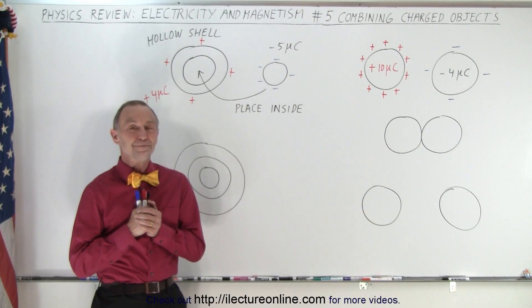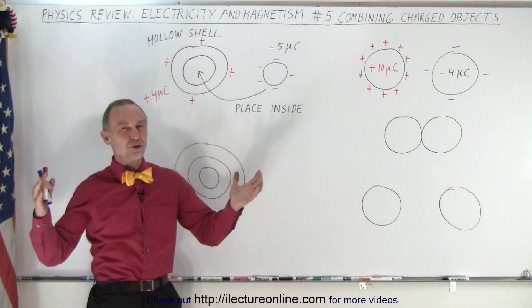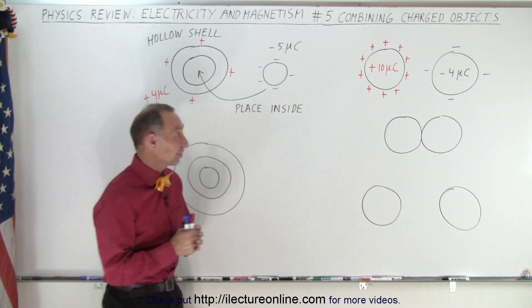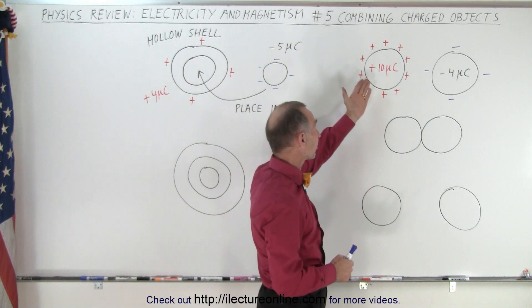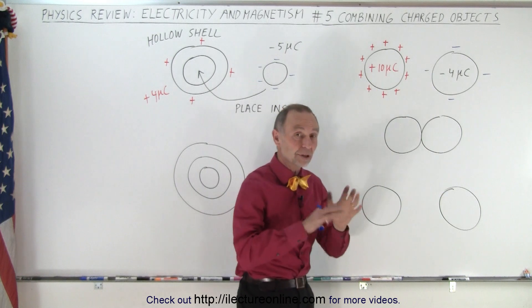Welcome to ElectronLine. So what happens when you combine charged objects? Like, for example, here we have a conductor that has an extra 10 micro coulombs on its surface.